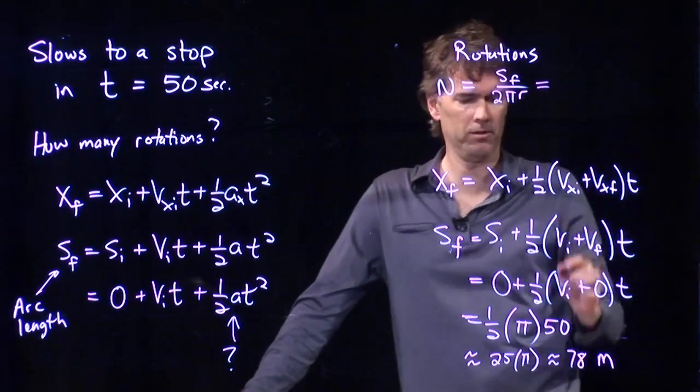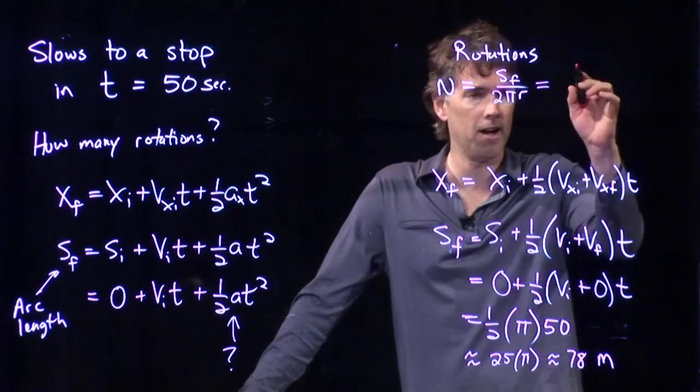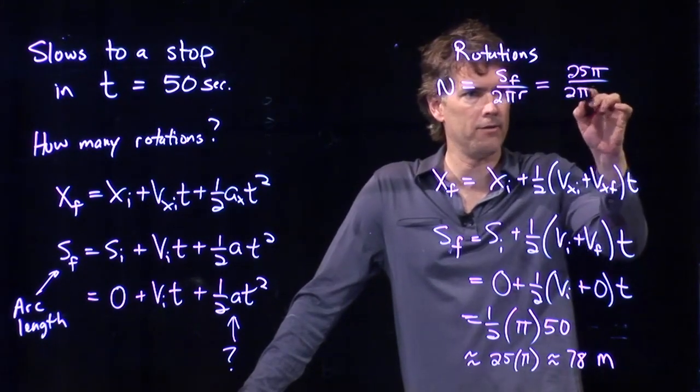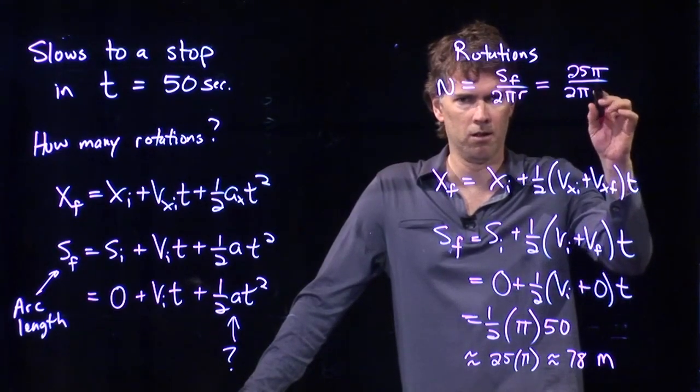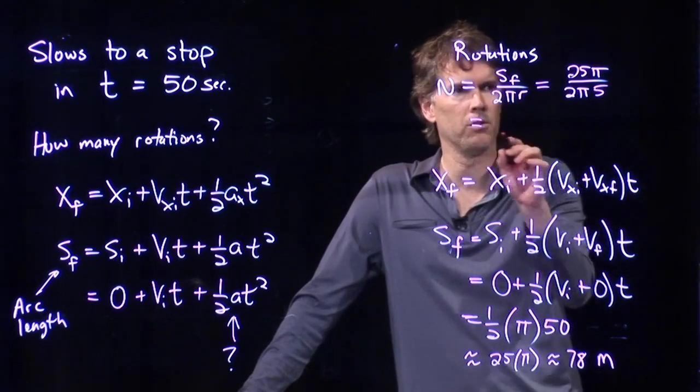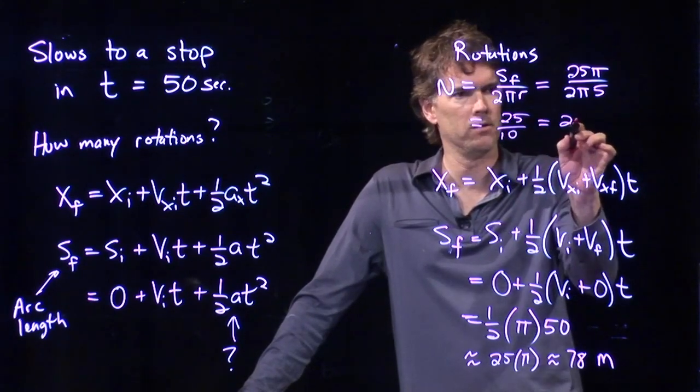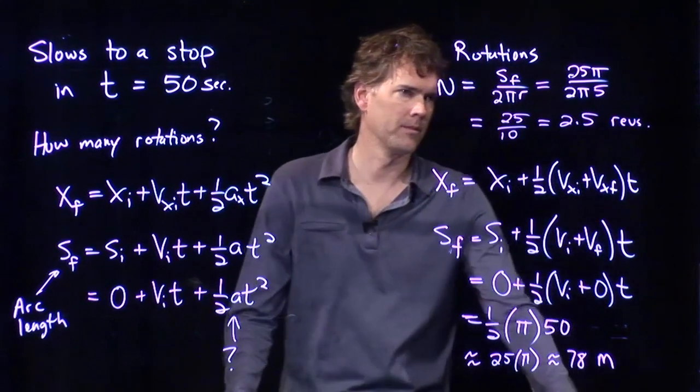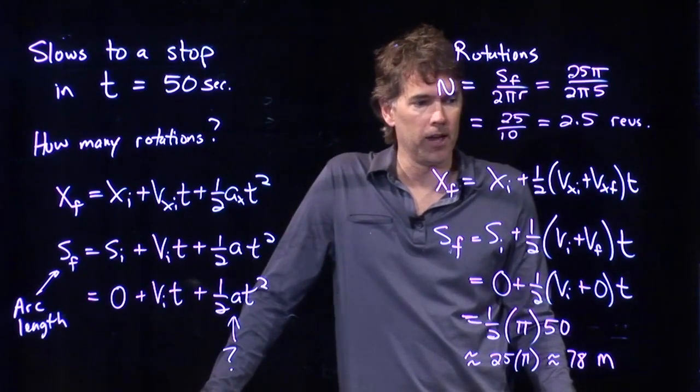And now, something really exciting happens, all right? Because we have those interesting numbers, s_f is 25 pi. Now, here we have 2 pi times the radius. What did we say the radius was? Five. Five meters. So, this becomes 25 over 10, which is two-and-a-half. Two-and-a-half revolutions. And then you come to a stop.